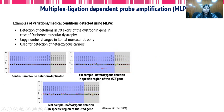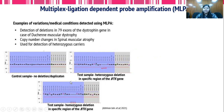When there is a homozygous deletion, the probe ratio will become 0, because there is no copy of that region compared to the control probe. Similarly, if there is a ratio of 2, that means there is a heterozygous duplication, and a ratio of 2.5 indicates a homozygous duplication.